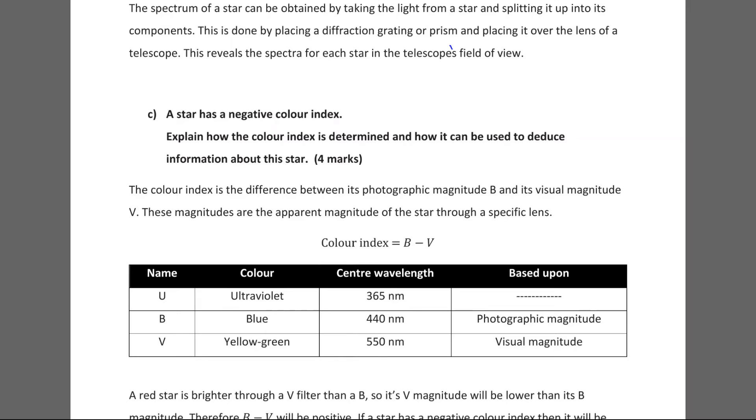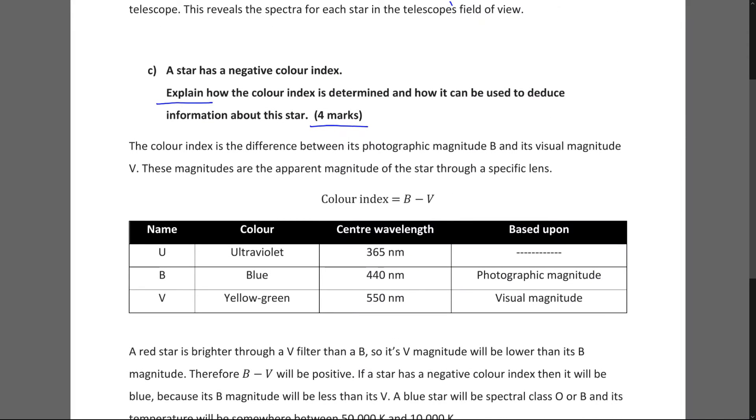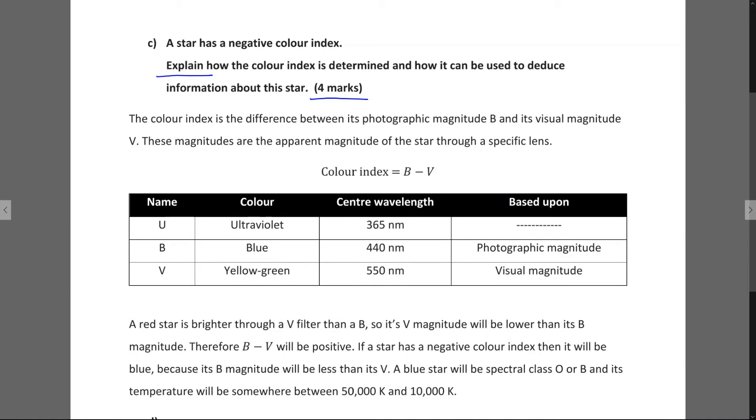A star has a negative colour index. Explain how the colour index is determined and how it can be used to deduce information about this star. So this is an explain question and it's four marks. So here's first of all we're going to start with an explanation of what the colour index is. So it is the difference between its photographic magnitude B and its visual magnitude V. These magnitudes are the apparent magnitude of the star through a specific lens. And the equation for the colour index is equal to B minus V. So that's a pretty important equation. And I would write that in your answer.